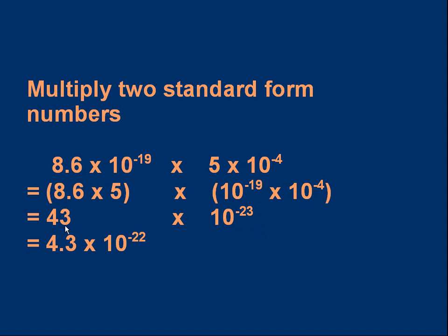That gives us 43×10⁻²³, but that's not standard form. To convert: divide 43 by 10 to get 4.3 — that mantissa is now correct. Since we divided by 10, we multiply 10⁻²³ by 10 to compensate, giving 10⁻²², a less negative power. The final answer is 4.3×10⁻²².